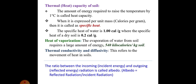The specific heat of water is 1 calorie per gram where the specific heat of dry soil is 0.2 calorie per gram. Heat of vaporization: the evaporation of water from soil requires a large amount of energy, that is 540 kilocalories per kg soil. Thermal conductivity and diffusivity refers to the movement of heat in soil.